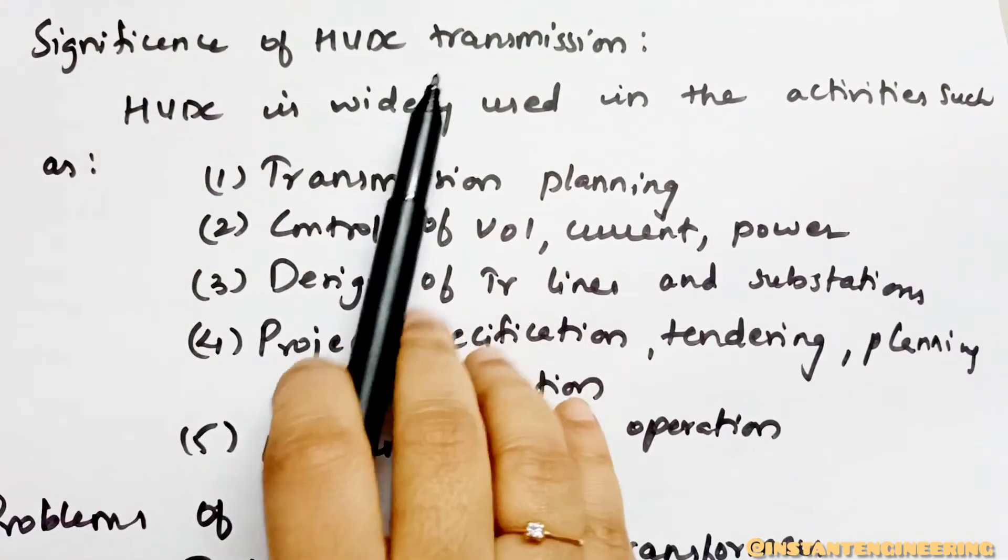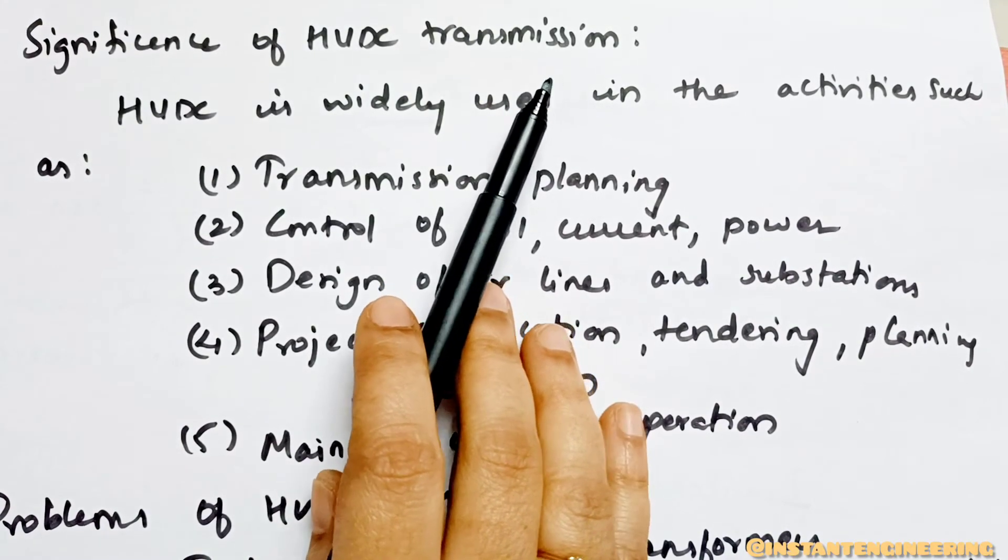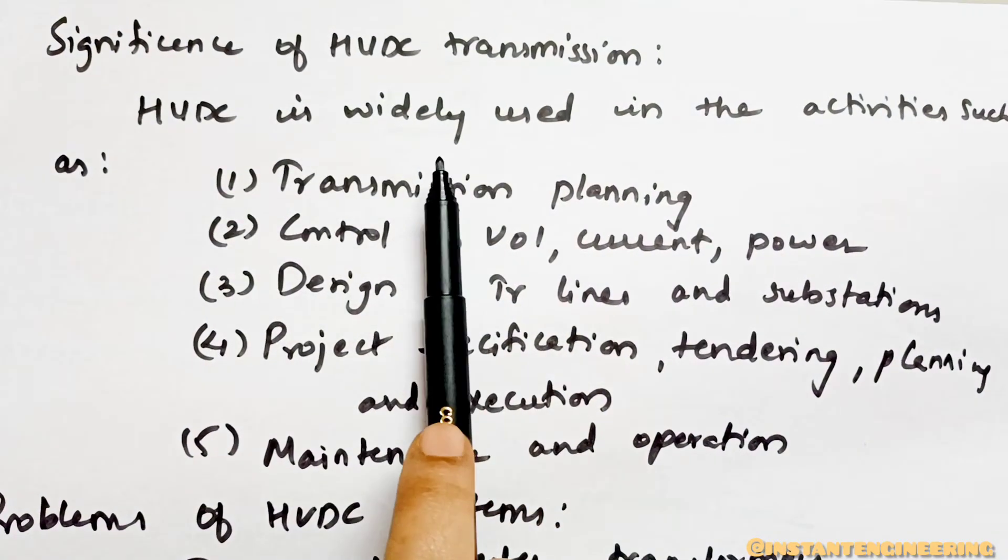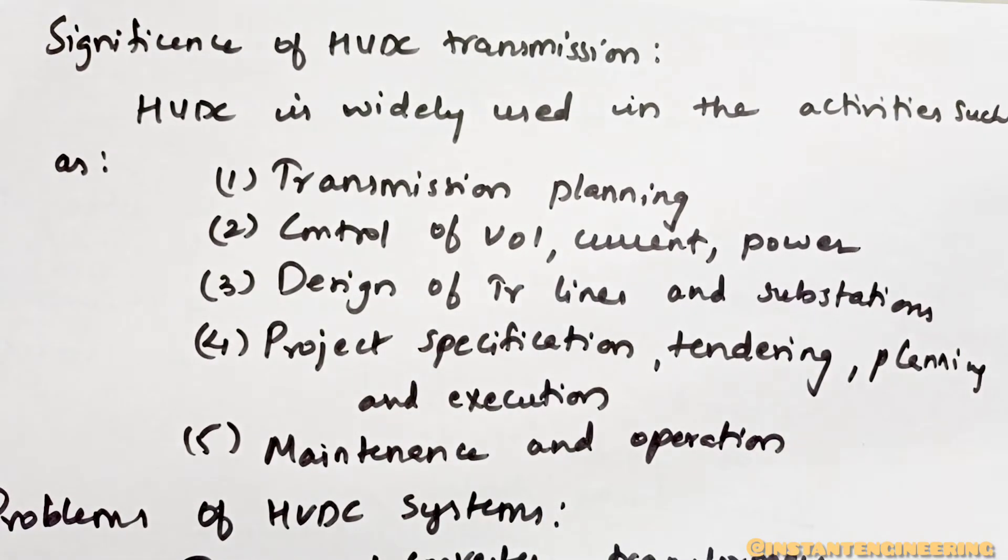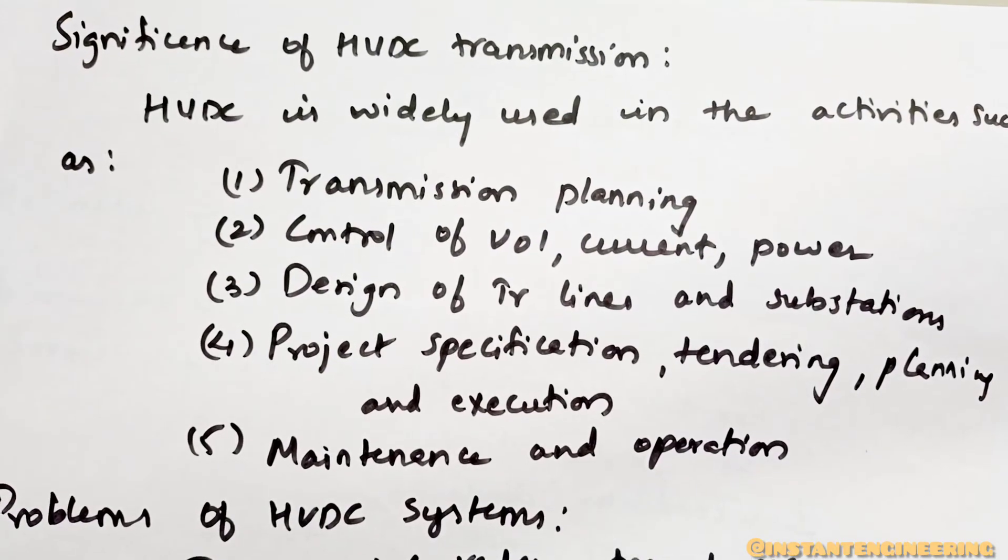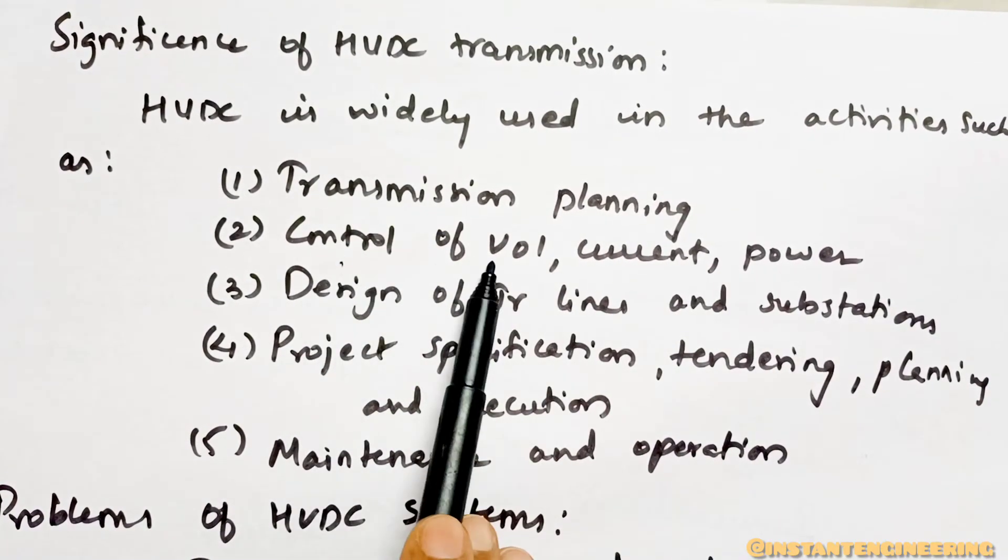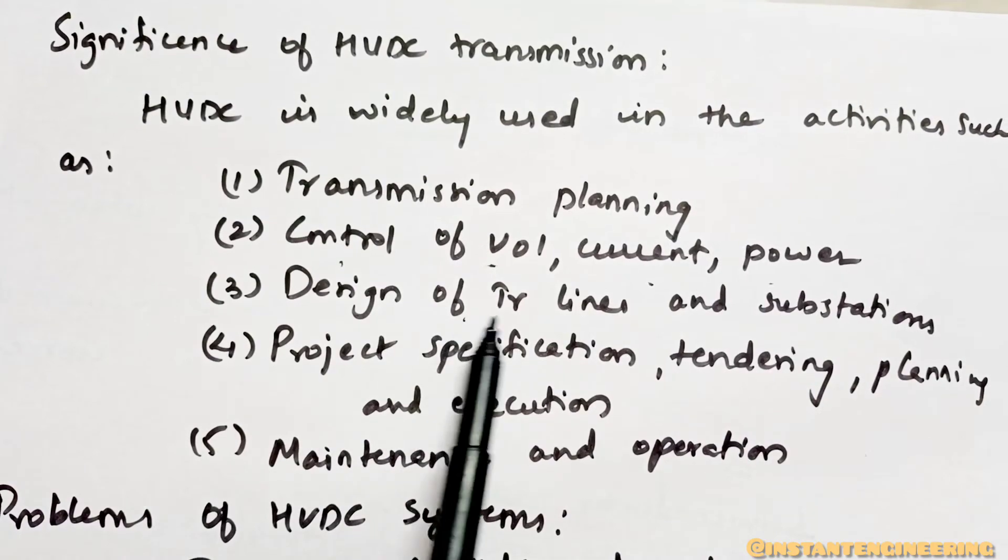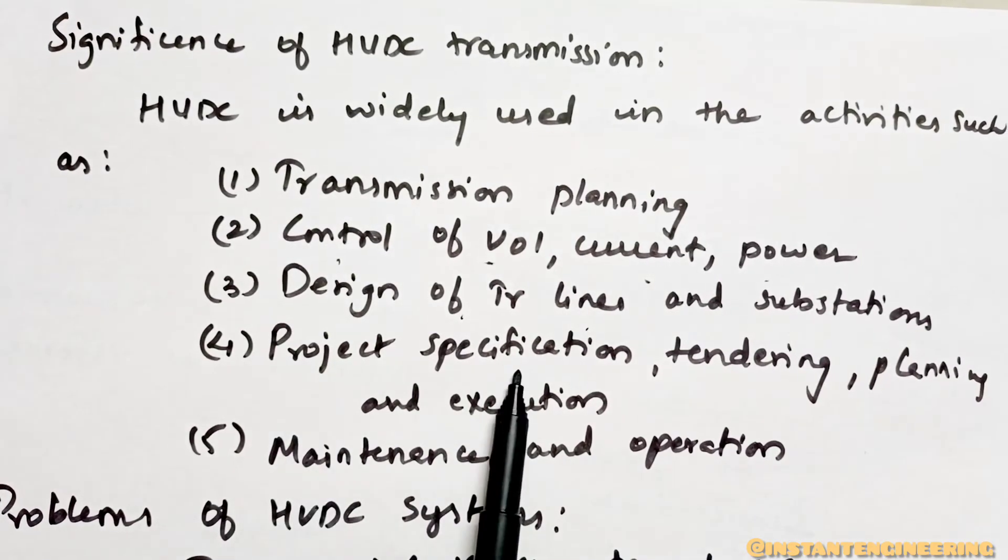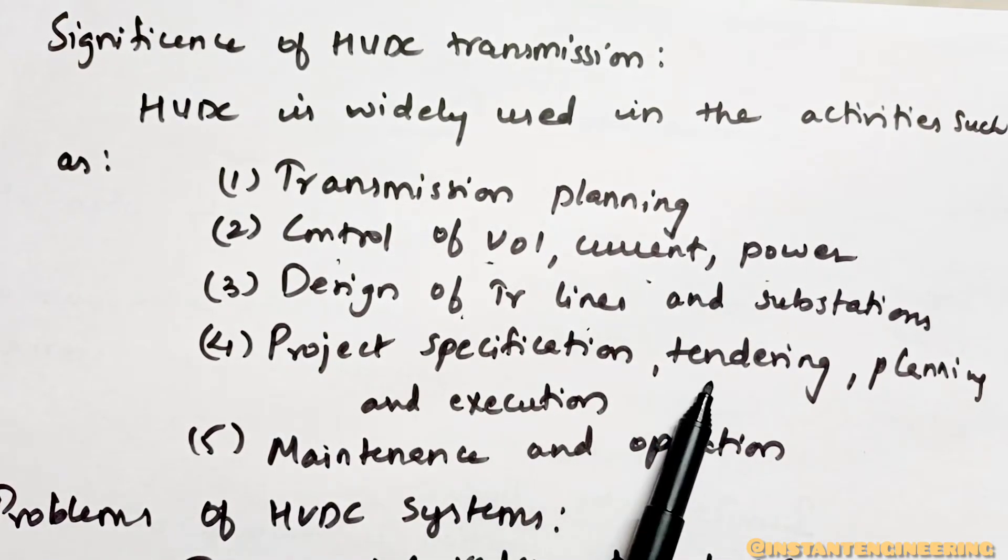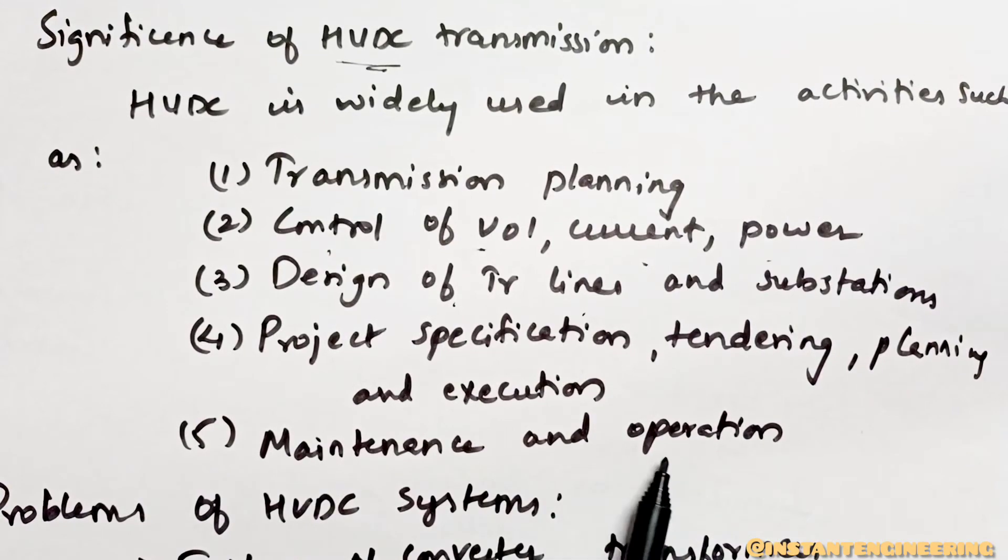Next topic is significance of HVDC transmission. Where we use this and what is its most important significance? Like I said, in transmission planning - whenever they are planning to start any transmission lines, they will use HVDC transmission. In transmission planning, when there is control of voltage, current, or power, design when they are designing transmission lines and substations, HVDC is considered. And project specification - when they are telling about the project, tendering, planning, execution, everything they have to include HVDC transmission. And maintenance and operation.